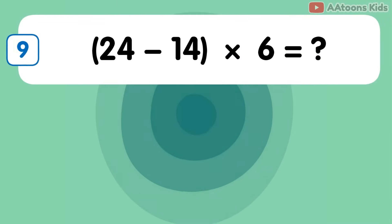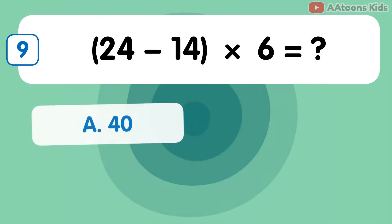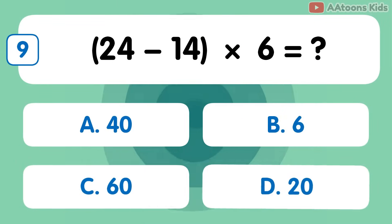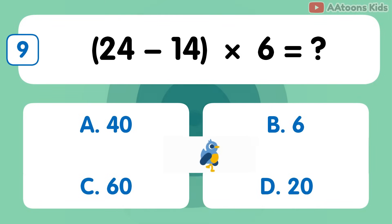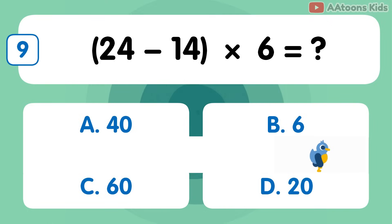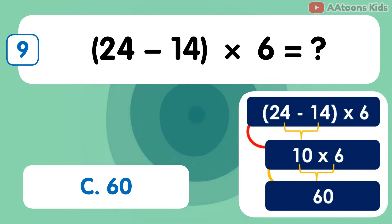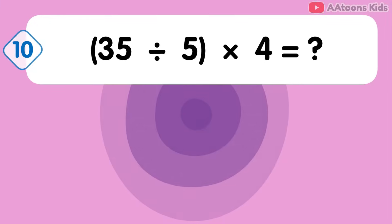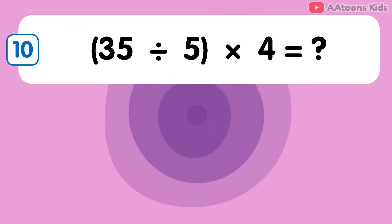24 minus 14 multiplied by 6 is 6. 25 divided by 5 multiplied by 4 is 8.